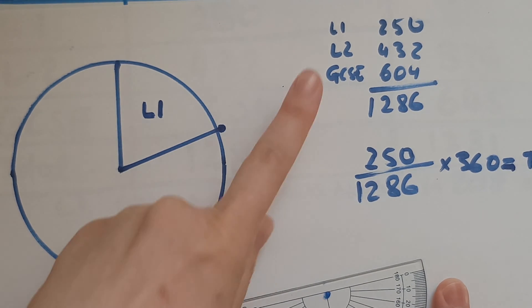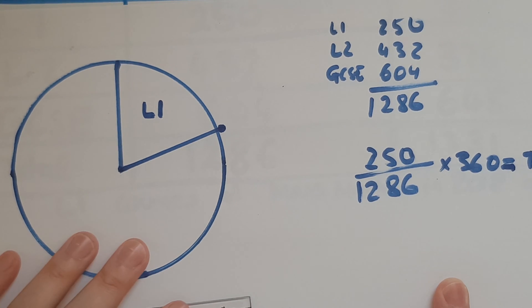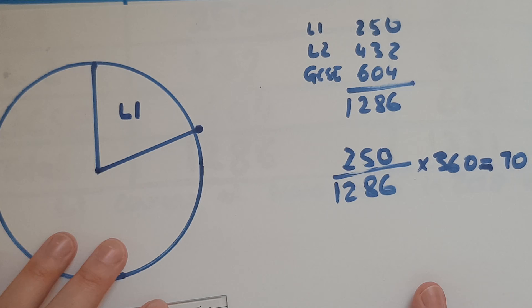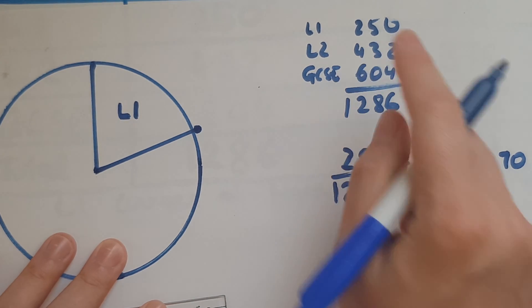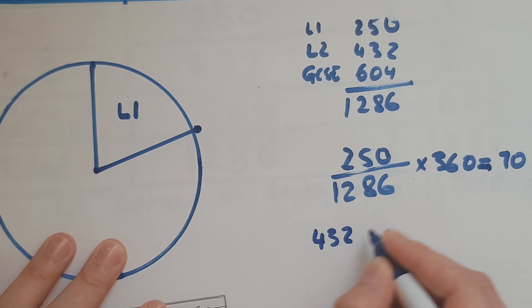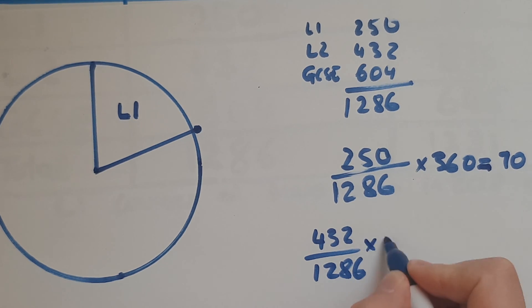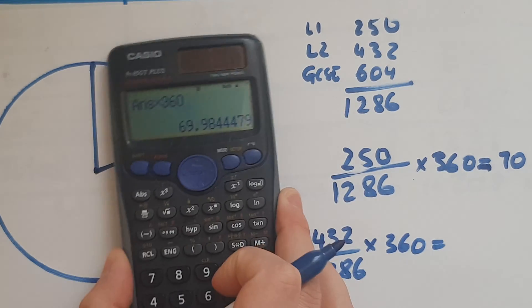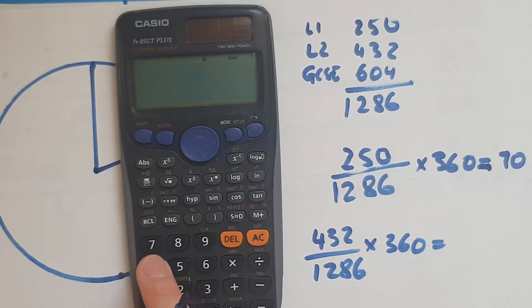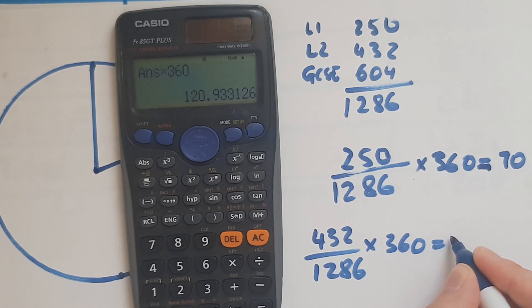So now we'll look at level two. So we'll do exactly the same, follow the same procedure. So level two is represented by 432 out of 1,286, which is a total, times by 360, which is the total number of degrees. So 432 divided by 1,286, times 360, that gives us 121 degrees.